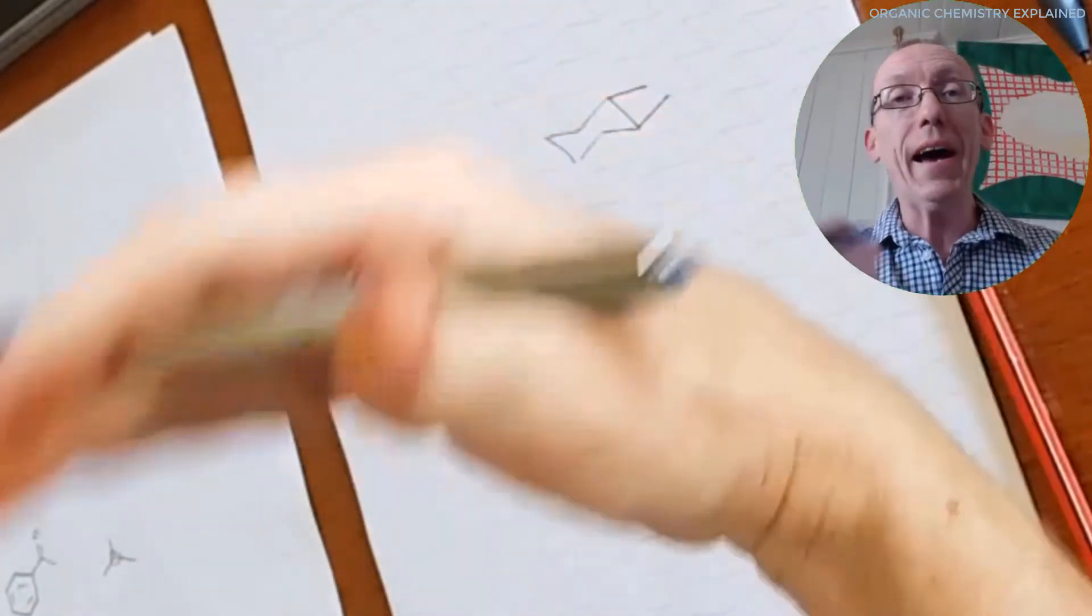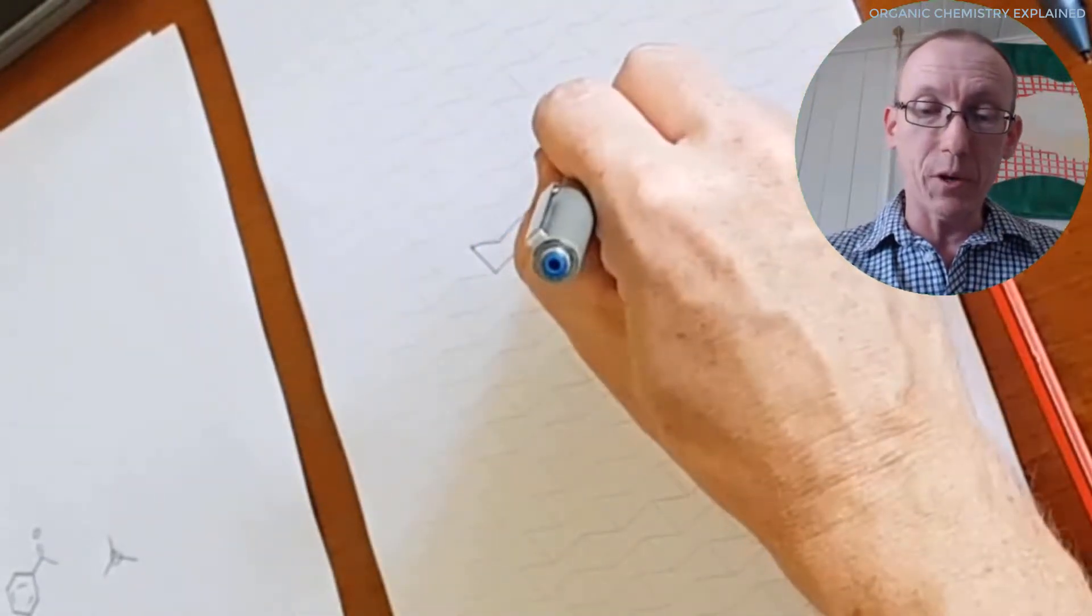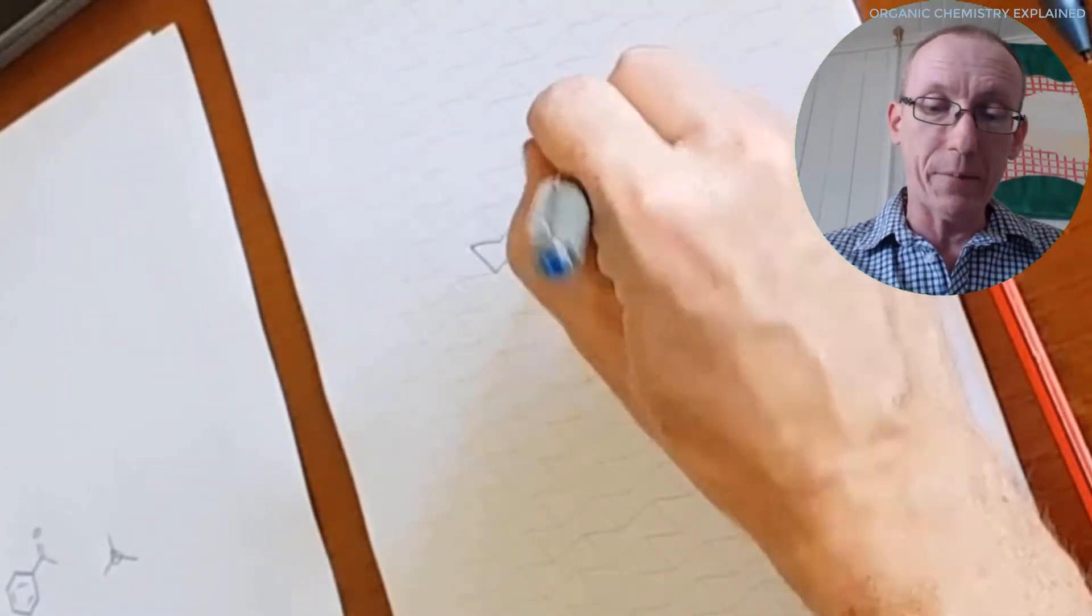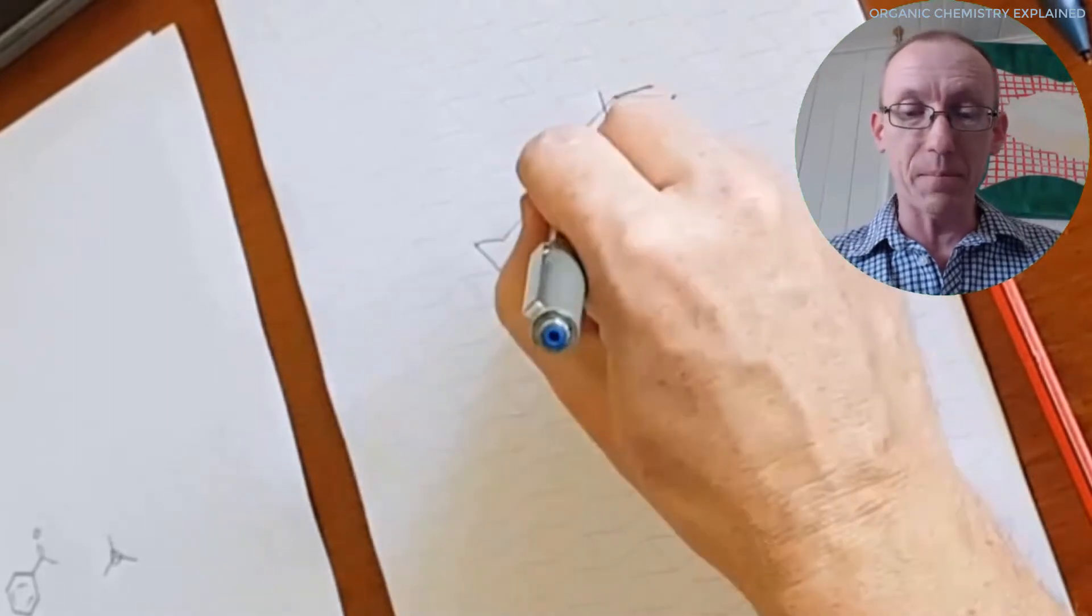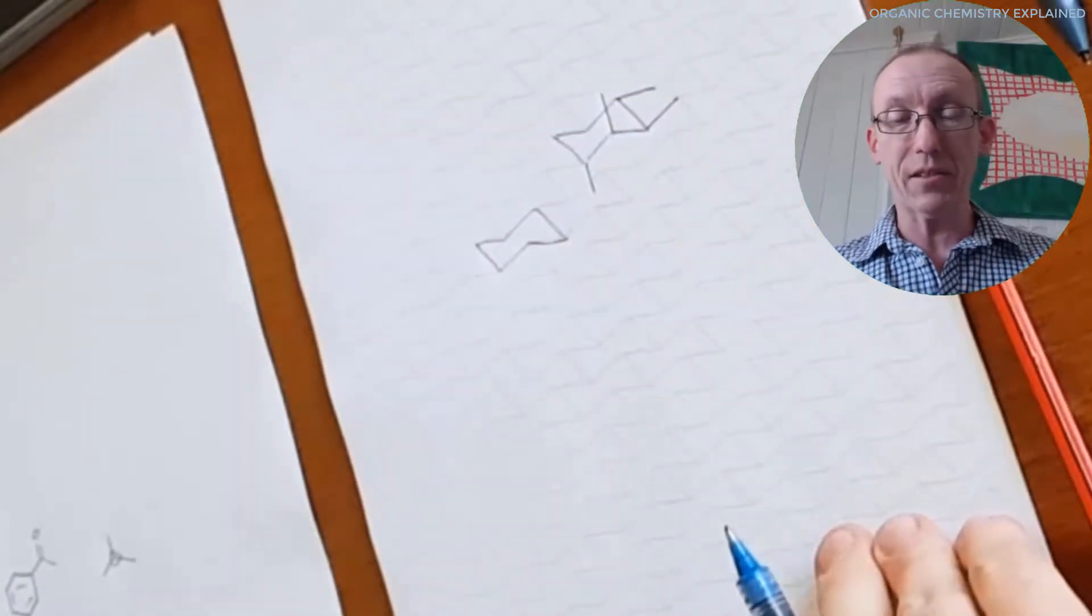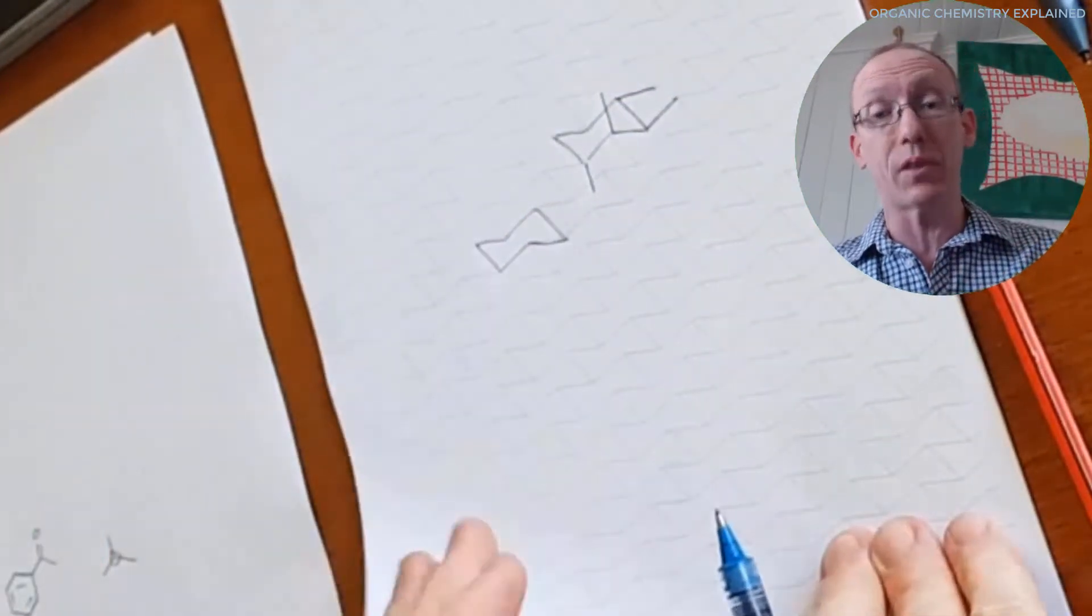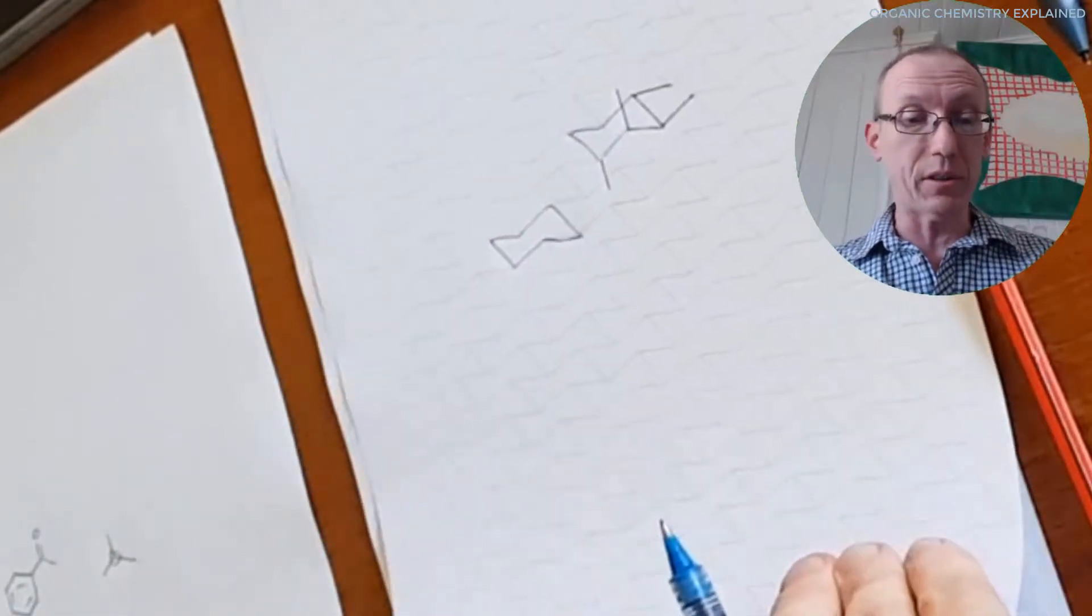And then your axial substituents will always be vertical. So they'll be vertical going away from the vertex where two lines meet. And so that lets you practice not only chair cyclohexanes, but also axial and equatorial substituents.